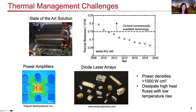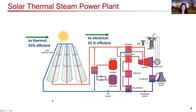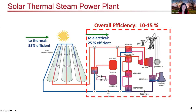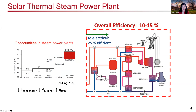Thinking about larger-scale systems such as a solar thermal steam power plant — these steam power plants still have very low overall efficiencies of about 10 to 15 percent. A significant aspect of that is the power cycle itself, where thermal to electrical conversion efficiency is only about 25 percent. This relies on phase change — the evaporation and condensation of water. If we can enhance the condensation processes to decrease the temperature of the condenser, we can decrease the turbine back pressure and potentially increase cycle efficiency significantly.